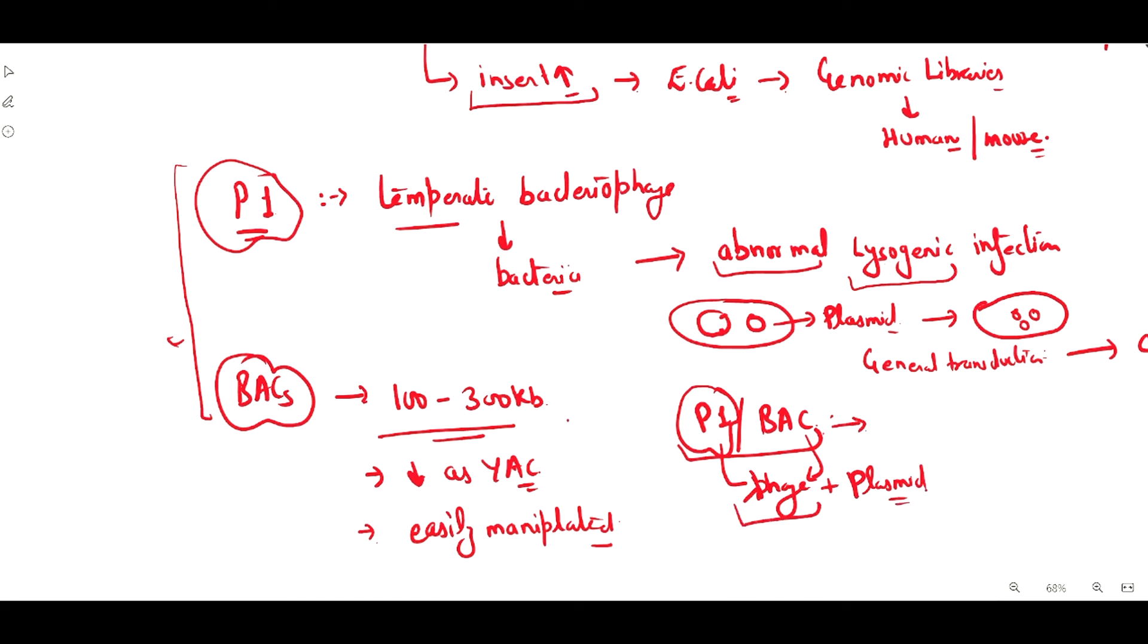P1 derived vector has the capacity of abnormal lysogenic infection cycle where it can independently exist and be transferred from one cell to another by general transduction. Whereas BAC only has bacterial artificial chromosome with the origin of replication and F factor for the transfer of plasmids from one cell to another cell.